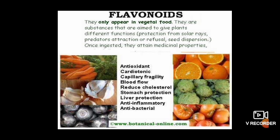Flavonoids appear only in vegetal food. They are substances that give plants different functions: protection from solar rays, predators, attraction or repulsion, seed dispersion, etc. Once ingested, they attain medicinal properties. The medicinal properties include antioxidant, cardiotonic, capillary fragility reduction, improved blood flow, reduced cholesterol, stomach protection, liver protection, anti-inflammatory, and anti-bacterial effects.